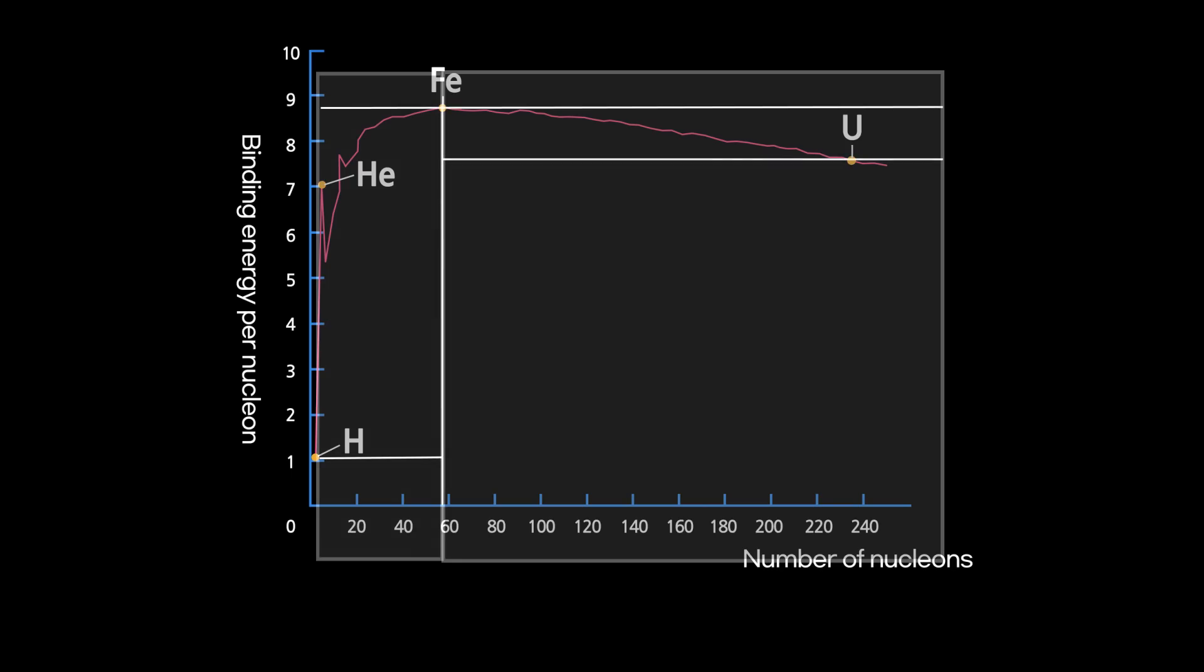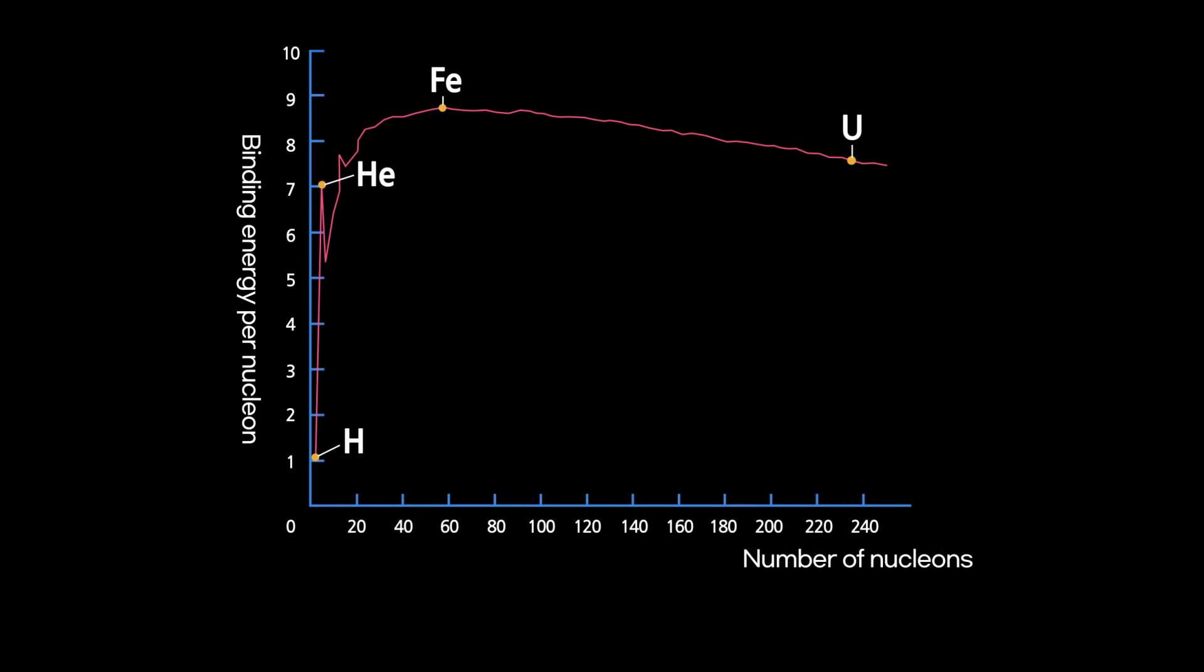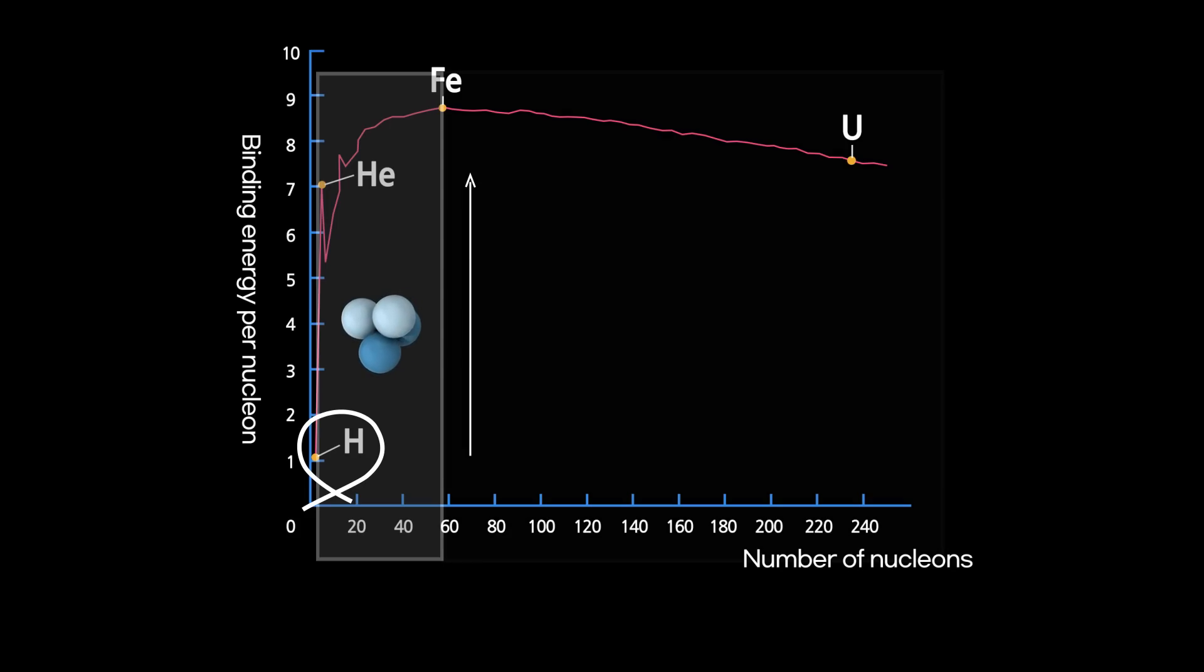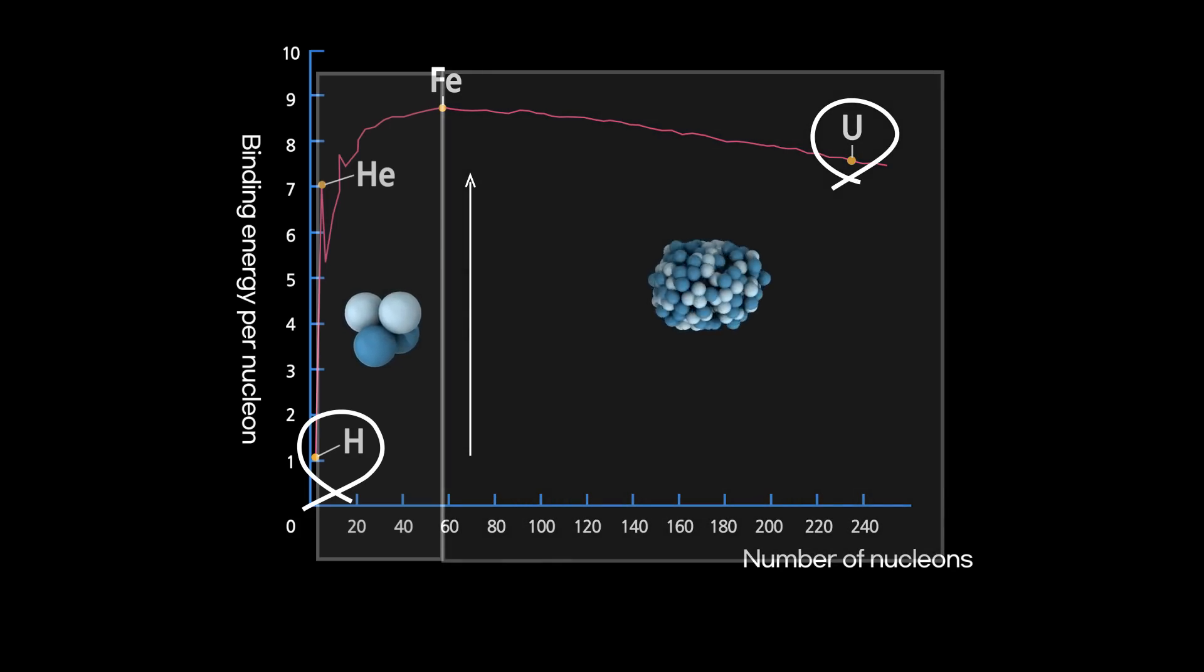Both nuclear fusion and fission try to become stable through a process of increasing bonding energy. To summarize, elements with fewer nucleons than iron, hydrogen for example, increase their bonding energy as their nucleons go through fusion, while elements like uranium, which have more nucleons than iron, increase their bonding energy through fission.